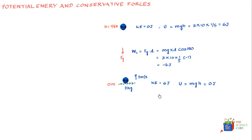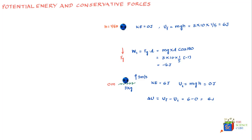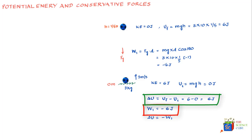An interesting relationship exists between the change in potential energy and work done. The change in potential energy ΔU equals U_final minus U_initial, which is 6 − 0 = 6 joules. The work done W1 during this upward journey is −6 joules. Physics tells us that the change in potential energy equals minus the work done: ΔU = −W, since −(−6) = +6, confirming the change in potential energy.